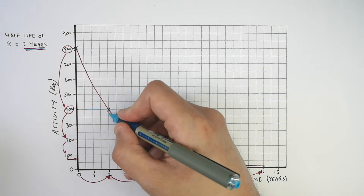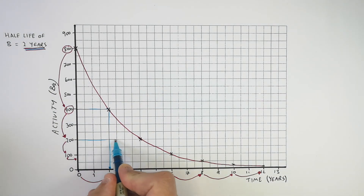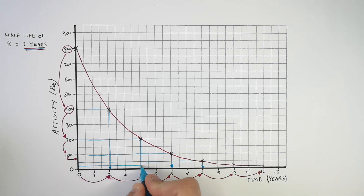So remember, every half-life the activity will decrease by half. In this case, it's every two years.